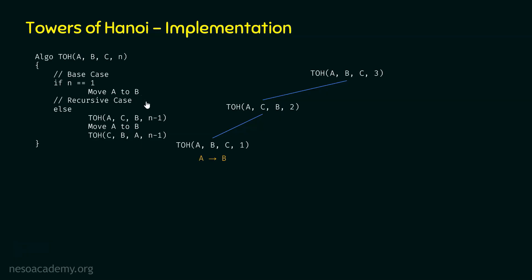We return from TOH(A,B,C,1) back to TOH(A,C,B,2). We left off at the second statement: move A to B. But since we are within TOH(A,C,B,2), B is replaced by C, so the move is actually A to C. The first move obtained is A to B, and the second move is A to C. The order is very important: A to B first, then A to C.